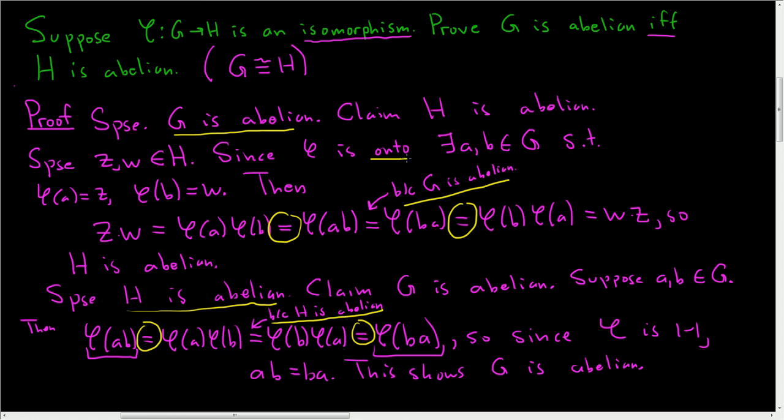You'll notice in the first part we used the fact that phi was a surjection or onto, and in the second part we used that it was one-to-one. So everything was needed about the fact that phi was an isomorphism. We used everything: injectivity, surjectivity, and the fact that it actually was a homomorphism. I hope this helps.